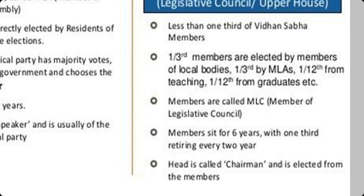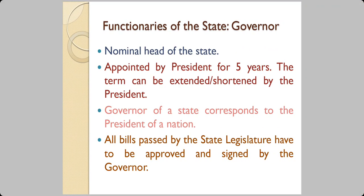The governor is the nominal head of the state, appointed by the president. The term is five years but can be extended or shortened as decided by the president. The governor of a state corresponds to the president of a nation — what the governor is to the state is the same as what the president of India is to the nation. All bills passed by the state legislature must be approved and signed by the governor — he is the final signing authority.